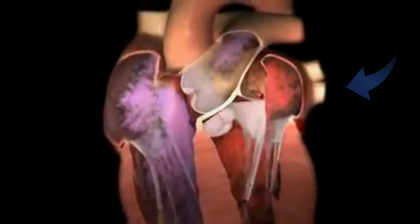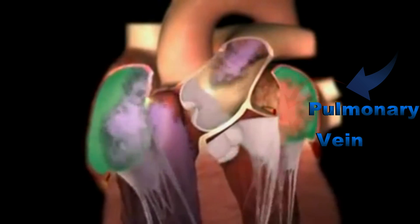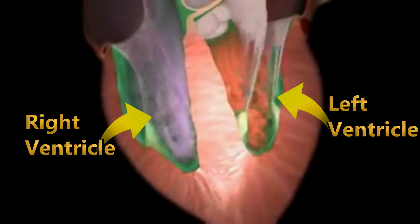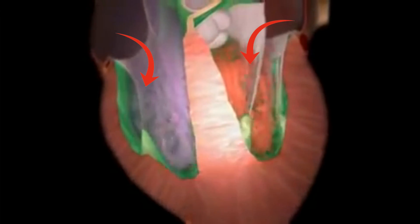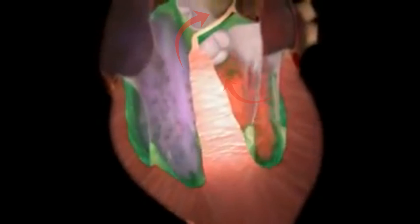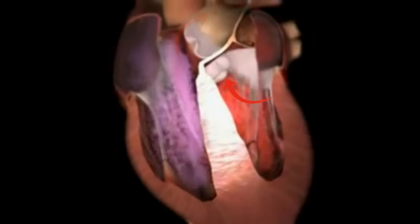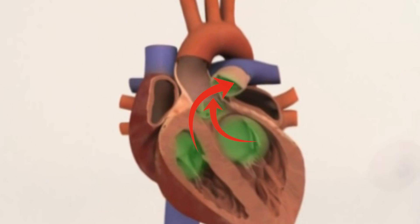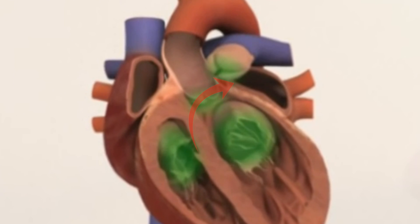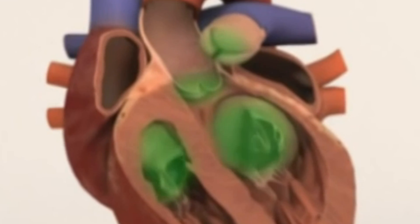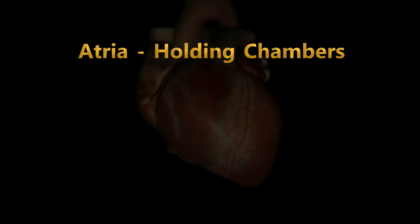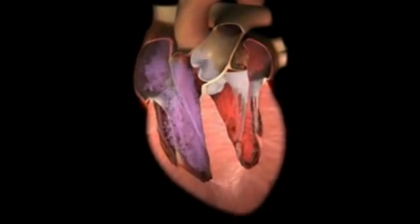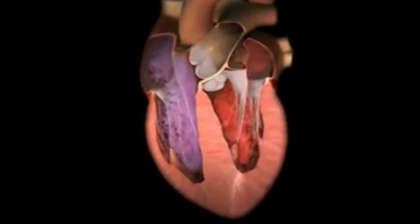The upper chamber on each side is called an atrium. The two atria receive blood from the veins — blood from the pulmonary veins flows into the left atrium. The lower chambers are called ventricles. Blood flows into the ventricles from the atria and is then squeezed out into the arteries. Blood from the left ventricle flows into the aorta, while blood from the right ventricle flows into the pulmonary arteries. The atria are referred to as holding chambers, while the ventricles are called pumping chambers.